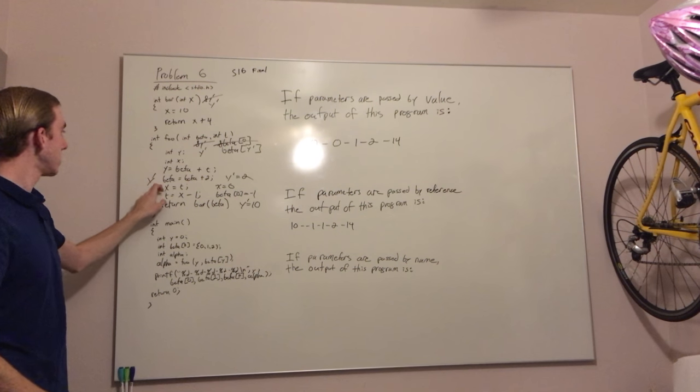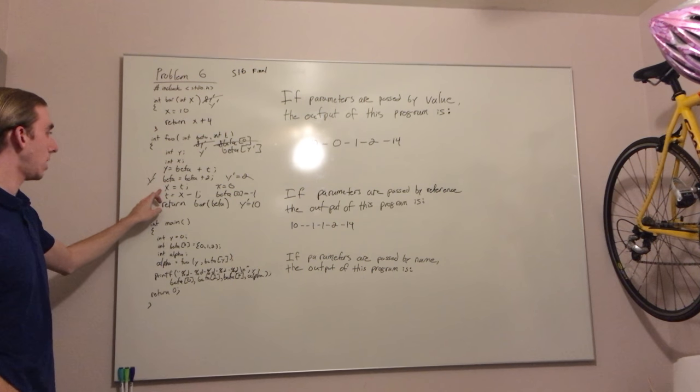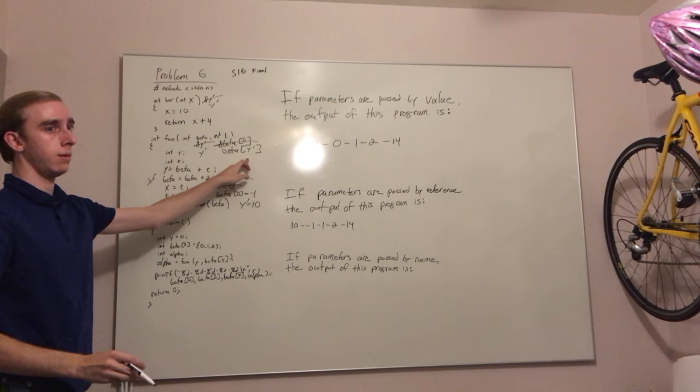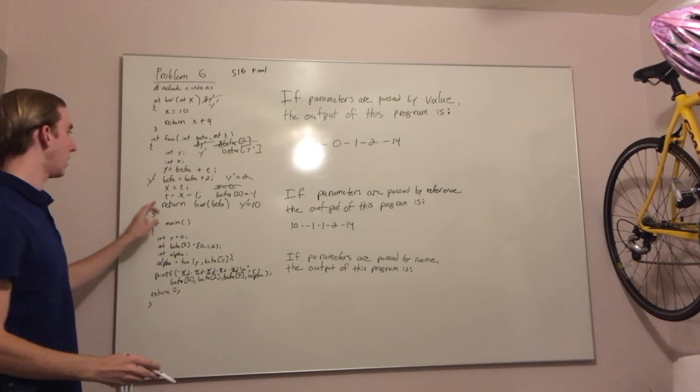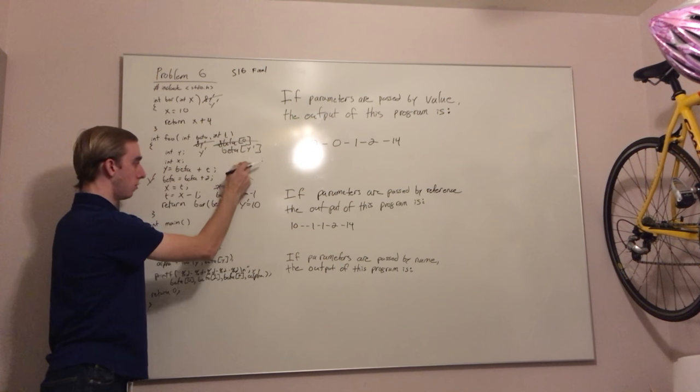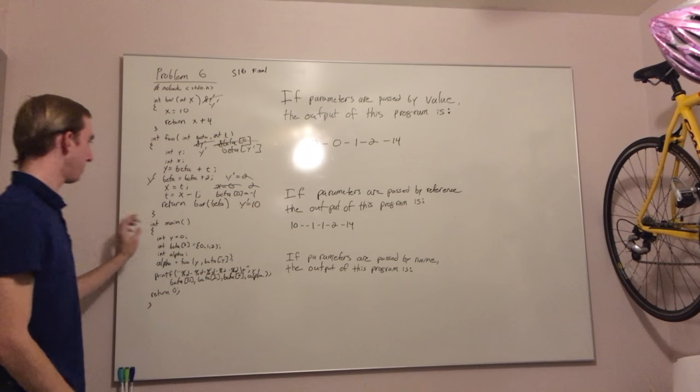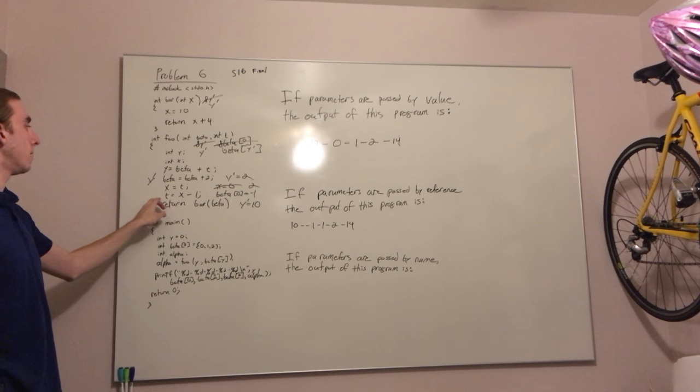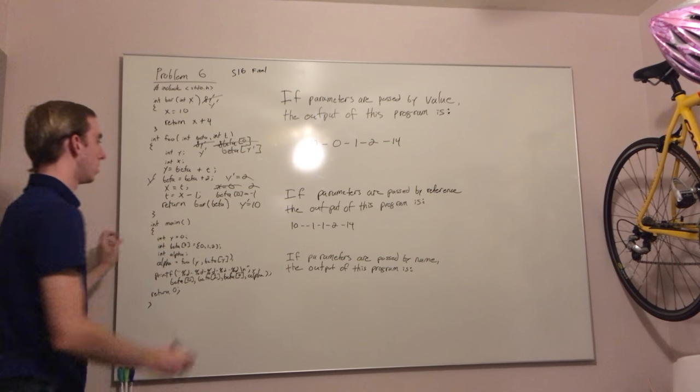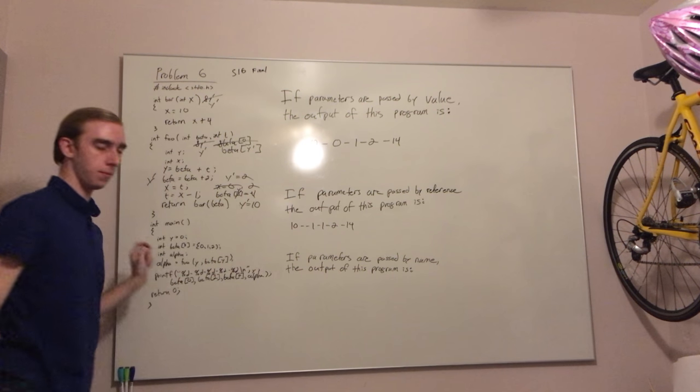So this line is still the same, but now this one changes. Because we are using beta of y prime instead of beta 0, x is now being set to beta of 2, which is 2 here. Then beta of 2 is being assigned 2 minus 1. So beta of y prime gets assigned positive 1.